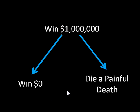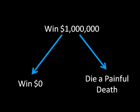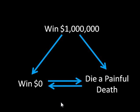It should be noted that those question marks are different from having arrows indicating indifference. Indifference is different from 'I don't know.' The missing arrows say: I don't know whether I prefer zero dollars to dying a painful death, I don't know if I prefer dying a painful death to winning zero dollars, and I don't know if I'm indifferent between the two. In contrast, the double arrows explicitly say that you know you are indifferent between these two things.